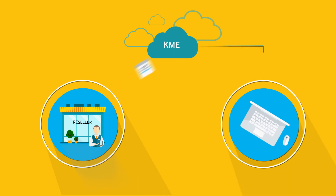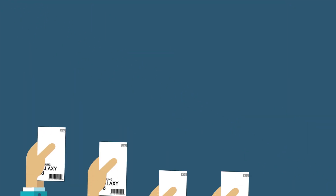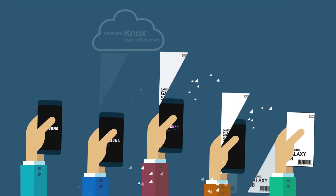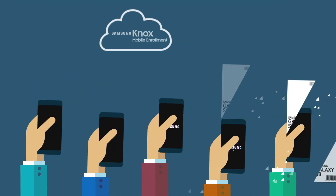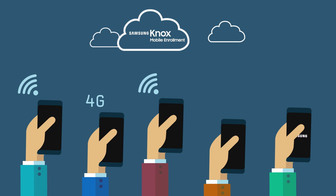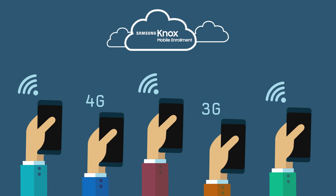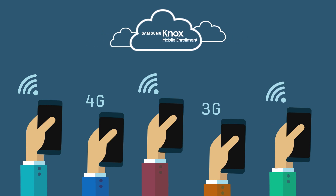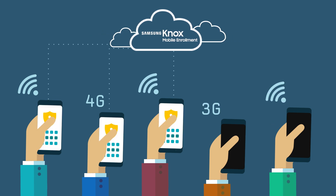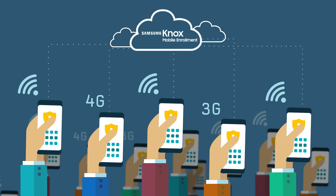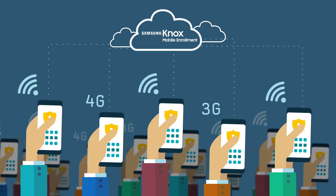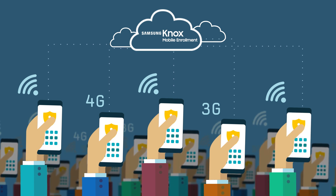You can then create an EMM profile to assign across all devices. Then just hand the devices to users, turn them on, connect to the internet, and Mobile Enrollment will push all the software to the devices to be installed and managed with your EMM. The devices are automatically and securely enrolled as soon as they connect to the internet, which is mostly done by users during the initial setup of a new device.